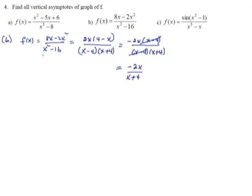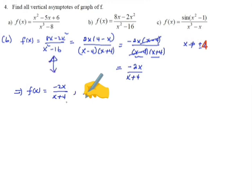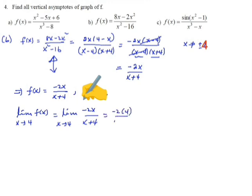But at the beginning, we need to restrict the value of x: x cannot be 4 and x cannot be minus 4. The simplified form of the given function is f(x) = minus 2x over (x plus 4). Let us check the limit of f(x) as x approaches 4. As x approaches 4, the limit becomes minus 2(4) over (4 plus 4), which gives minus 8 over 8, which is minus 1. The limit as x approaches 4 is not infinity, so x equals 4 is not a vertical asymptote — there will be a hole at x equals 4.